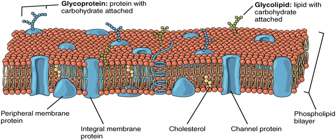The hydrophobic tails of membrane lipids are hydrocarbon tails whose length and saturation is important in characterizing the cell. Lipid rafts occur when lipid species and proteins aggregate in domains in the membrane. These help organize membrane components into localized areas that are involved in specific processes, such as signal transduction.